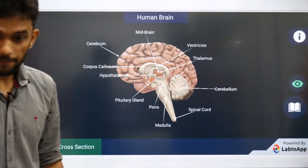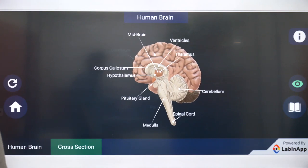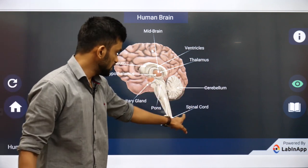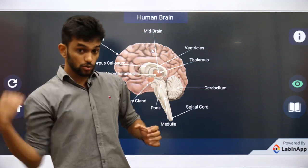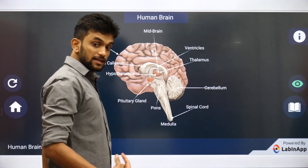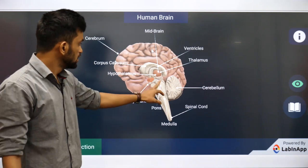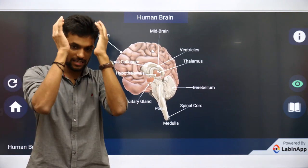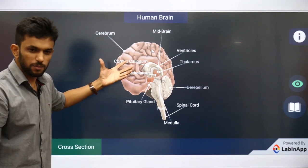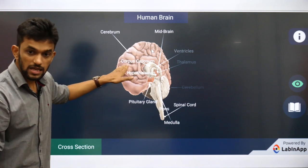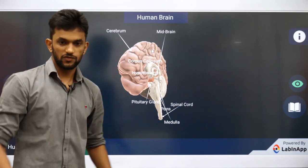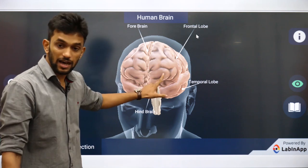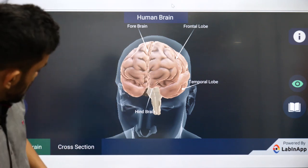Looking at the brain model: the entire pink region is the cerebrum. The brain leads to a tail-like structure which is the spinal cord. The cerebrum consists of two hemispheres, and these two hemispheres are connected to each other by a tissue called the corpus callosum.